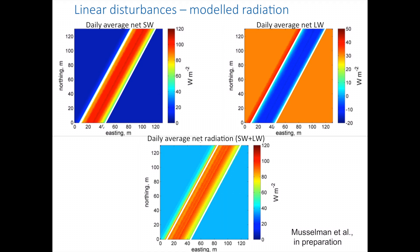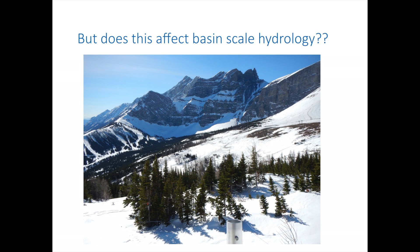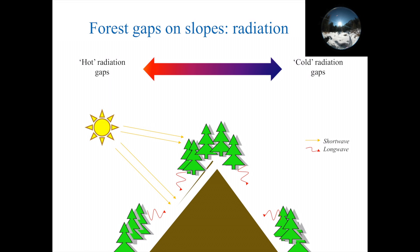If you want to know how much solar radiation there is by a particular tree, that's very useful. But how does that affect basin-scale hydrology — how does it affect us down in Calgary? We can simplify those models and take them to a larger scale and look at the effect of forest gaps on radiation and slopes. If you're on a south-facing slope, those are hot radiation gaps — they get lots of solar radiation, the trees heat up, and those gaps are going to melt fast. On a north face, they're shaded from solar radiation, losing energy to clear skies in the spring very rapidly, and they stay cold.